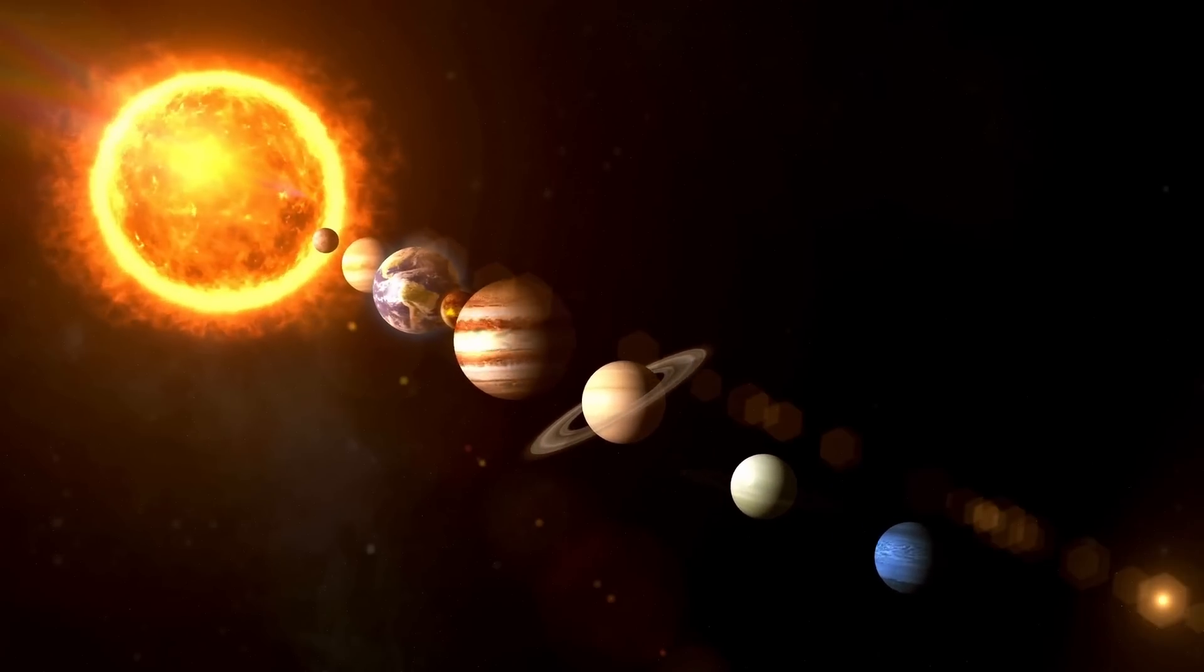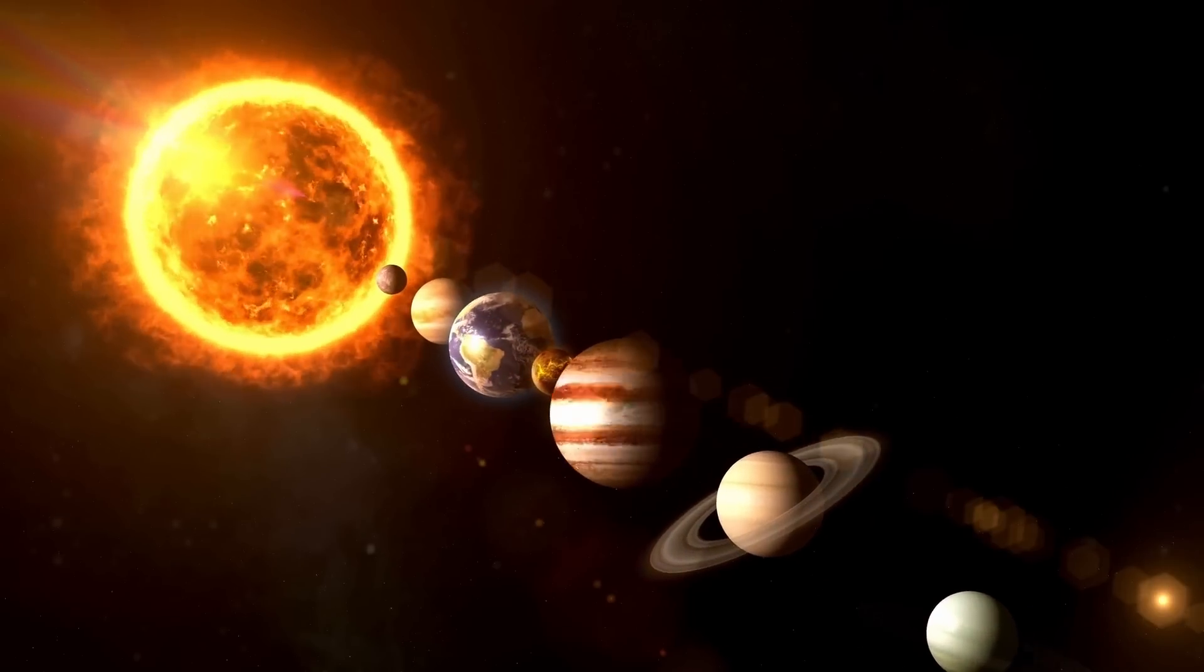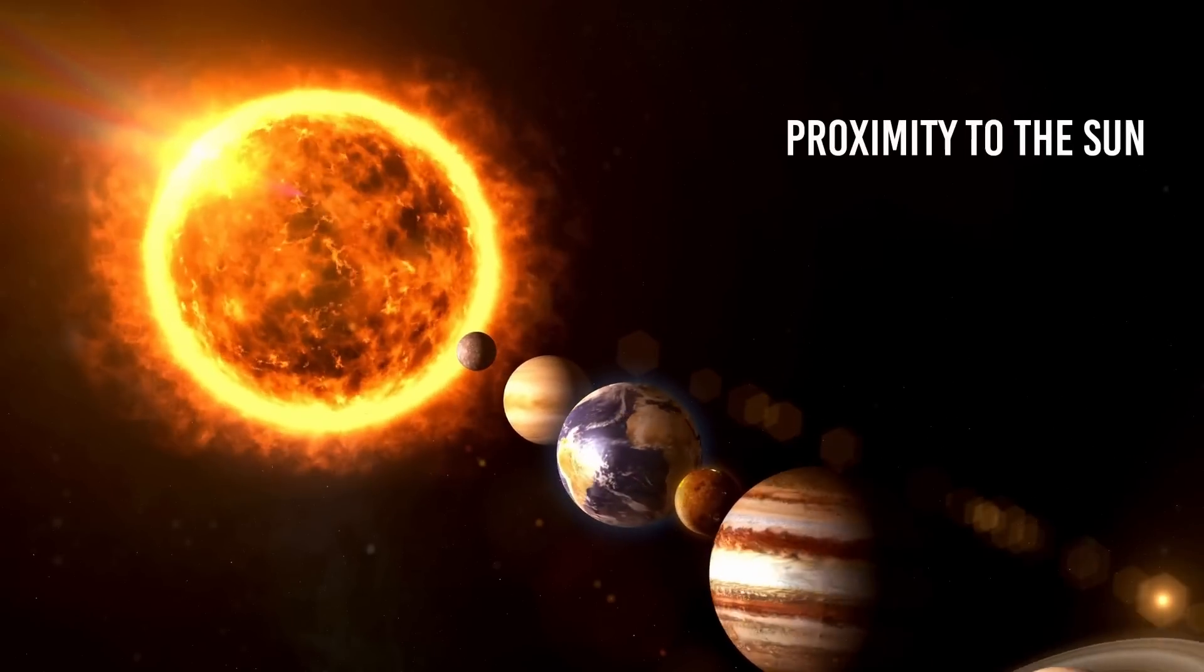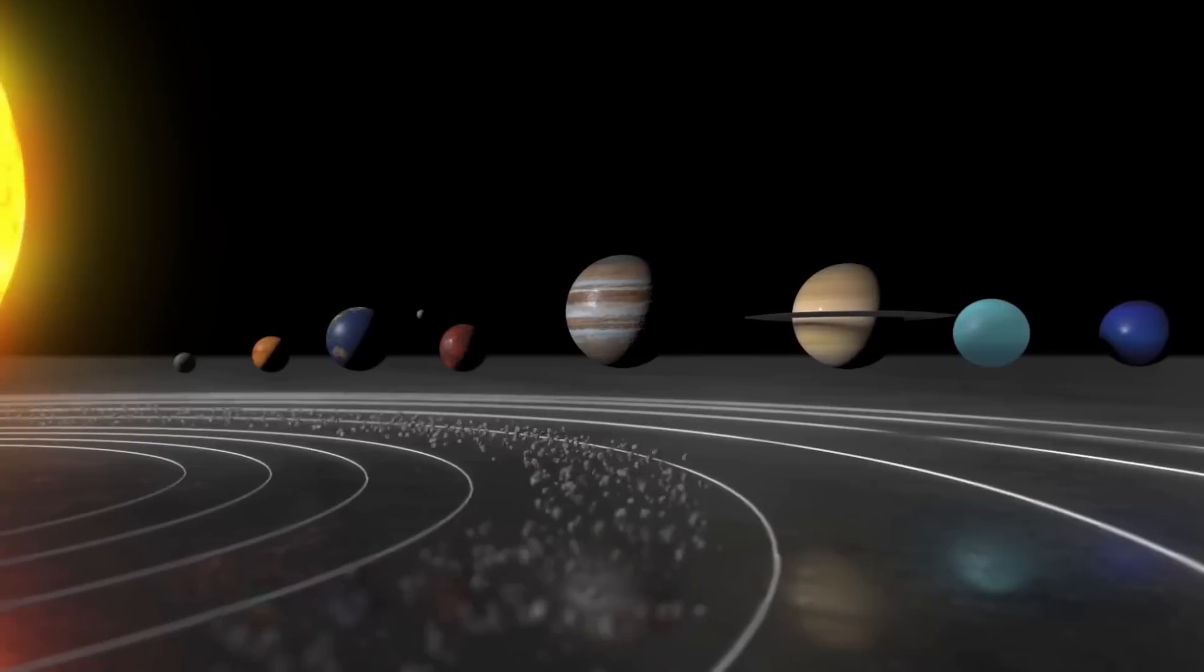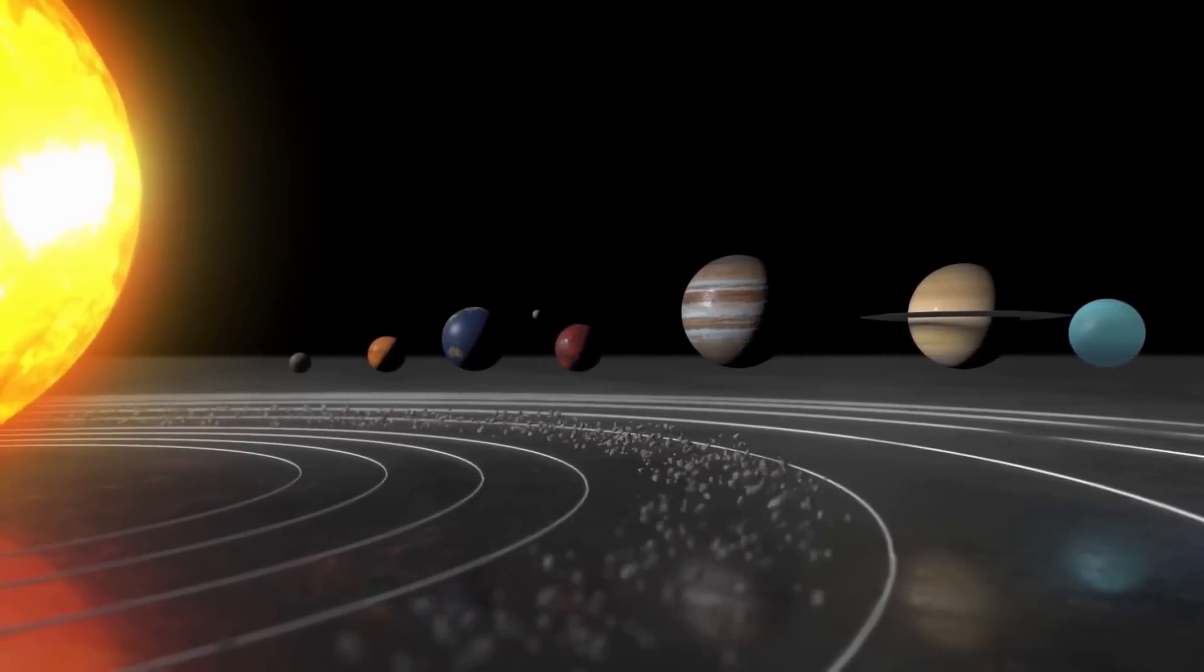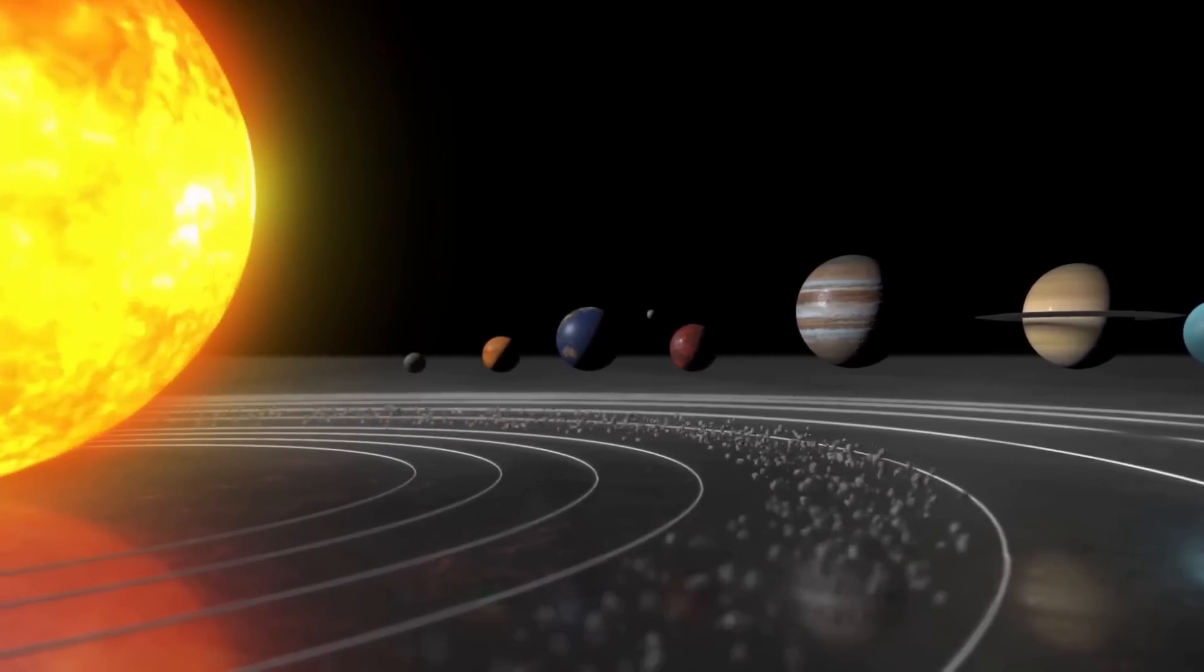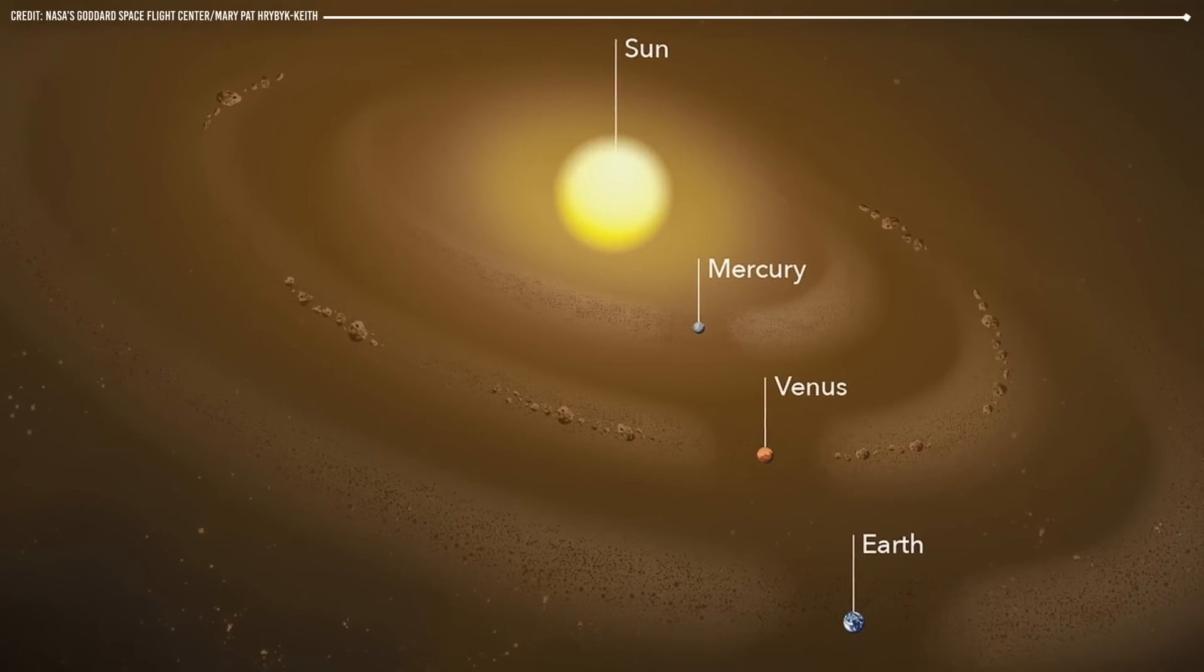One of the primary reasons why Venus is so hot and inhospitable is its proximity to the Sun. Venus is the second planet from the Sun and is located closer to the Sun than Earth. As a result, Venus receives much more solar radiation than Earth does. This intense radiation causes the planet's temperature to rise, resulting in a runaway greenhouse effect.